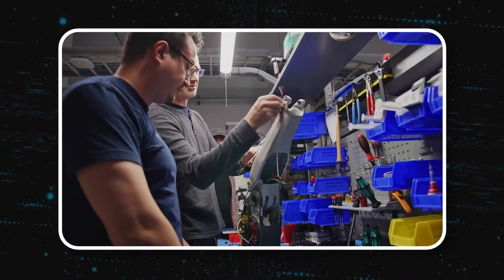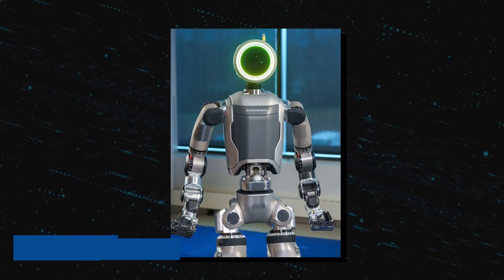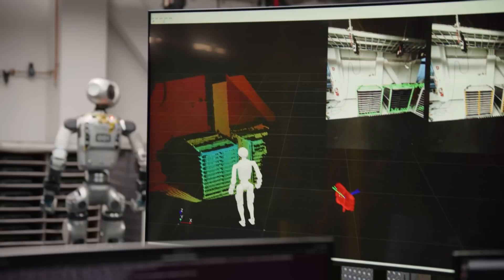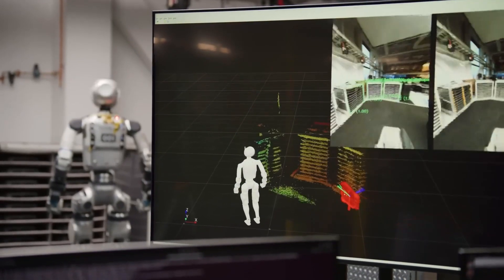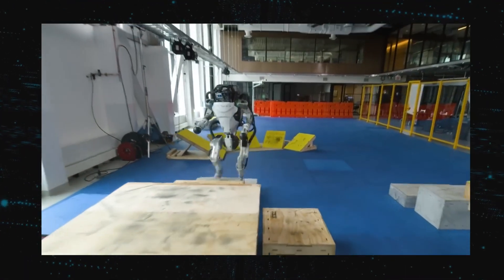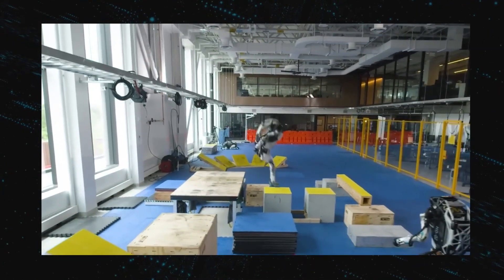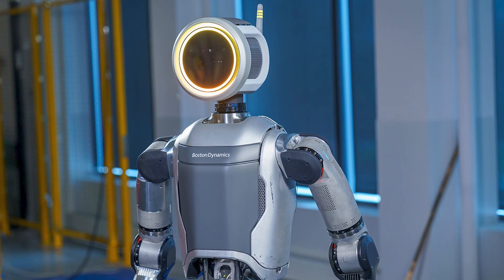Boston Dynamics breaks it all down in their recent video. Humanoid robots are exciting because they can step into our world and start working. No special setup, no custom environments. The world is built for humans, so the best robots should be able to navigate it just like we do. That's the big idea behind Atlas.